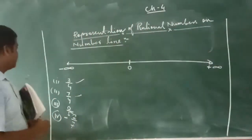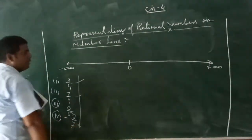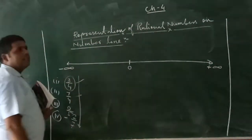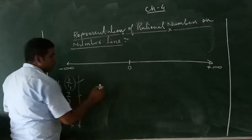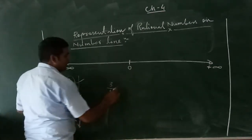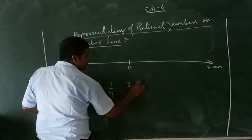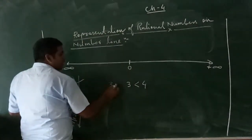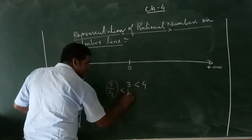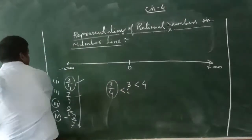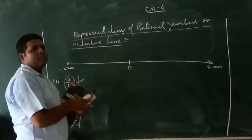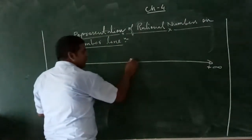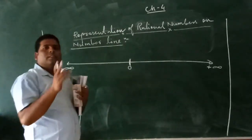We will represent these numbers on the given rational number line. How can we denote three by four? Since in three by four, the numerator three is less than the denominator four — three is less than four — it means that the fraction will be less than one.